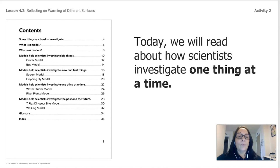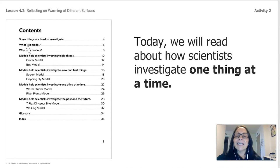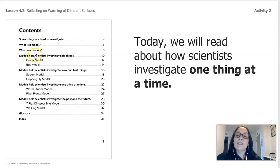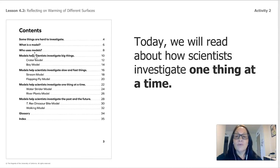Today we will read about how scientists investigate one thing at a time. Looking at the contents, I can choose where I want to go — page four covers things that are hard to investigate, page six talks about models, page eight talks about who uses those models. Every section tells me as a scientist what part of the book I want to read. Let's continue and see what we can learn as scientists.